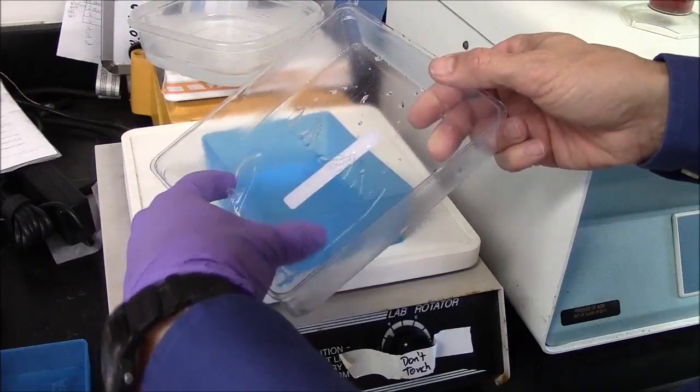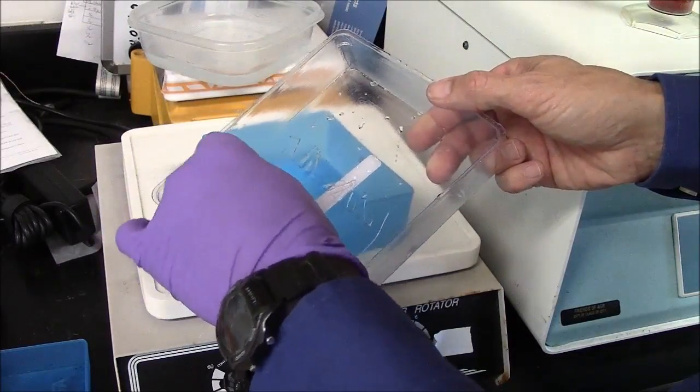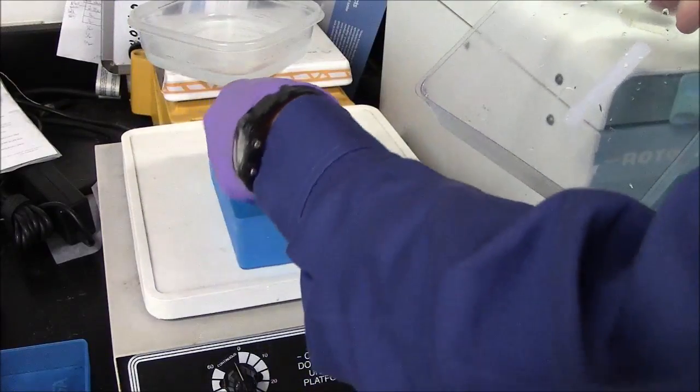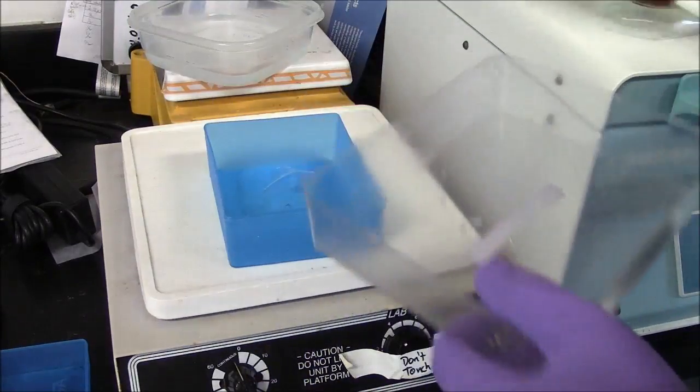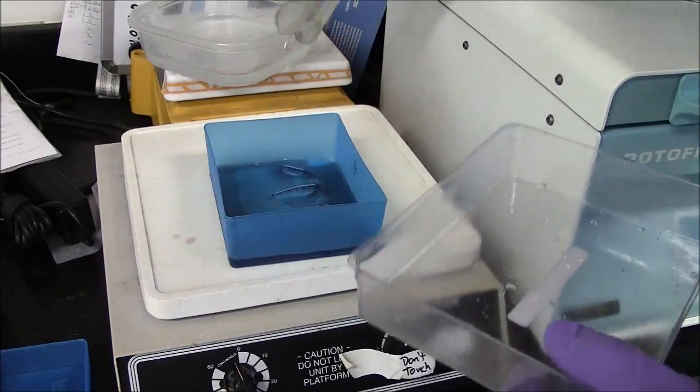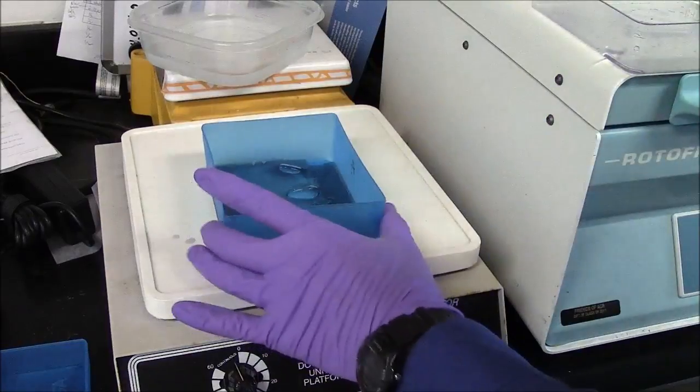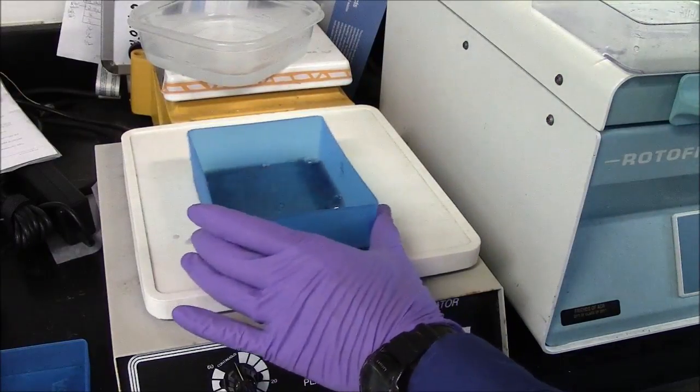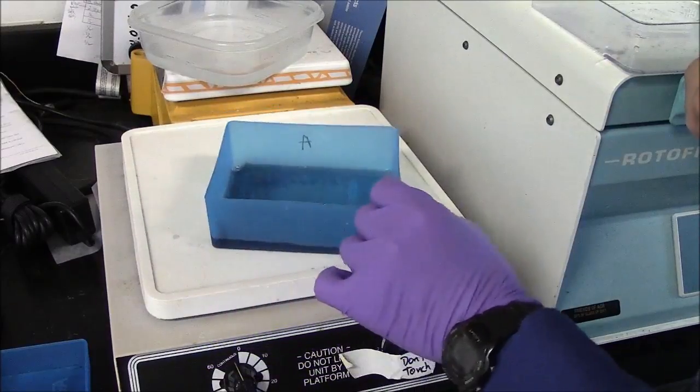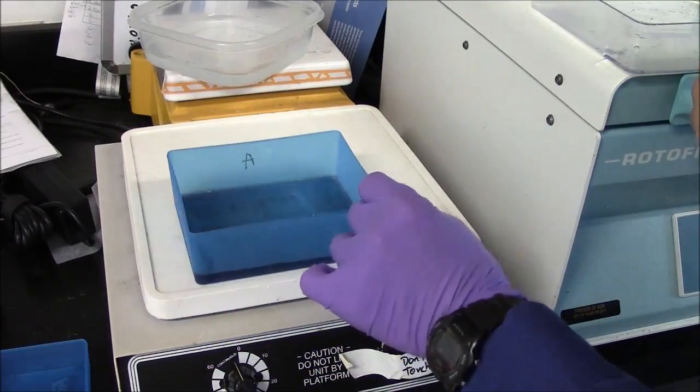I'm attempting to pick up the gel now. It is fragile, but not so fragile that I cannot move it. There we go. Add my stain. So it should be that the gel is covered by the stain and the rocker here, the shaker, will gently agitate that for about an hour.